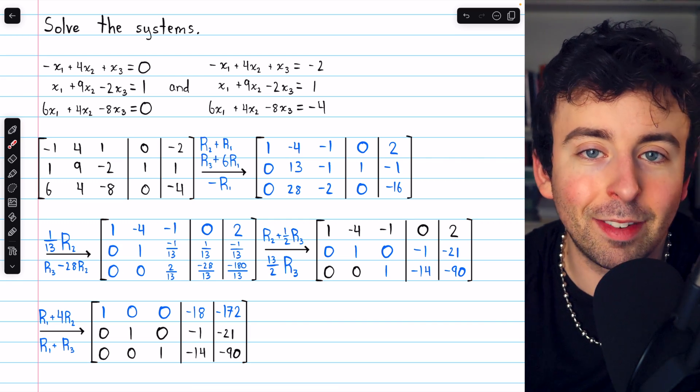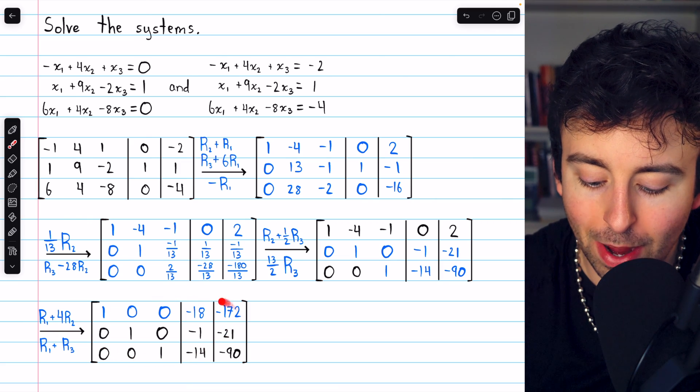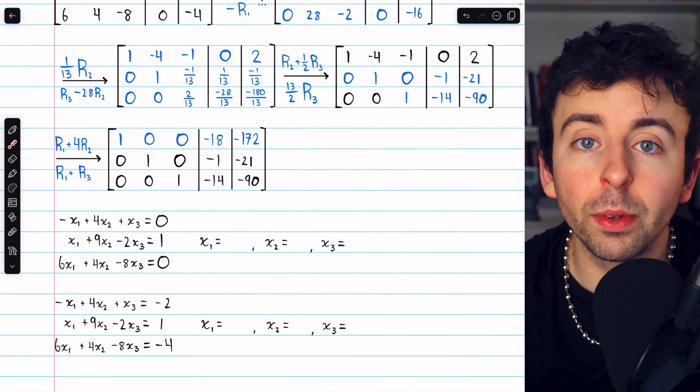If not, link in the description to my lesson going over it. In the end, we end up with this reduced row echelon matrix. And so we've solved both systems of equations.